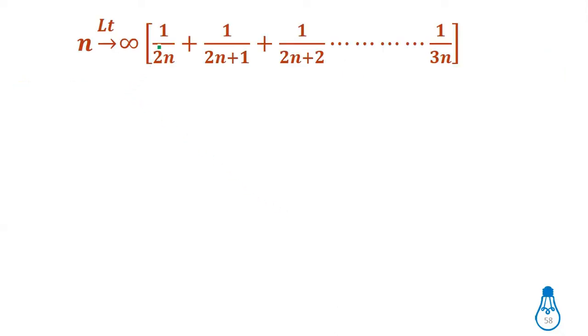Limit as n tends to 0: 1/(2n) + 1/(2n+1) + ... + 1/(3n). This can be written as n divided by (2n), with n terms in that format.